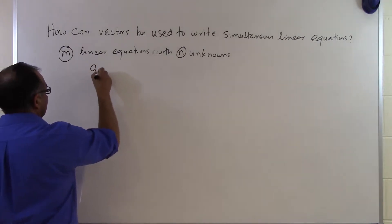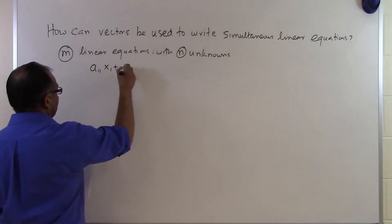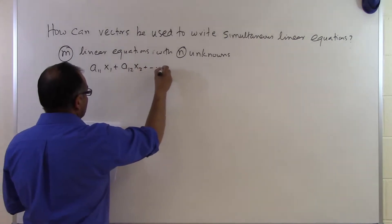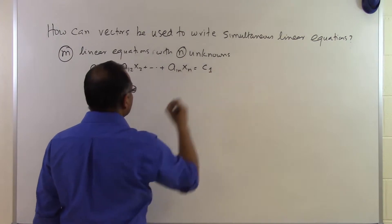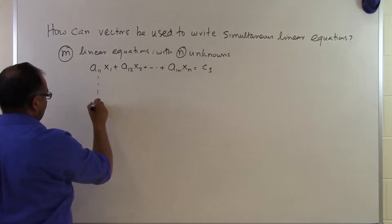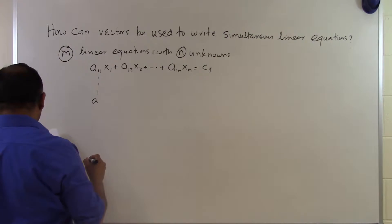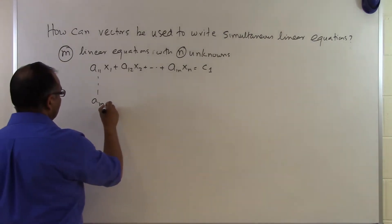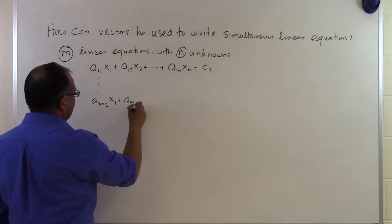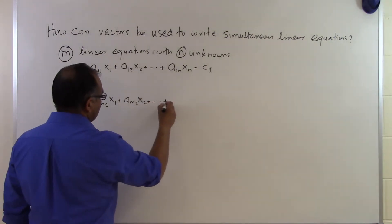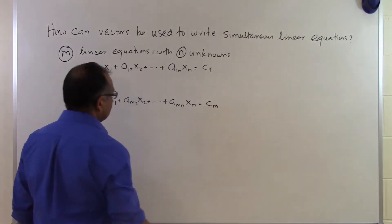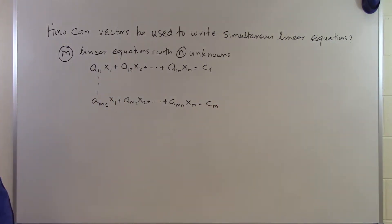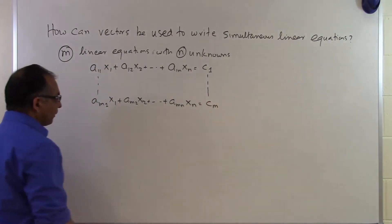Those equations look like this: a11x1 plus a12x2 plus all the way up to a1nxn equals c1, and the last equation will be am1x1 plus am2x2 plus up to amnxn equals cm. So we are given these M equations and we have N unknowns.